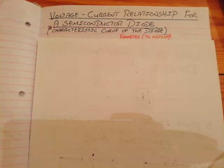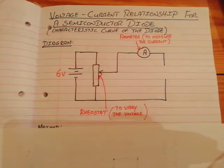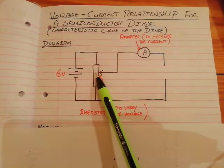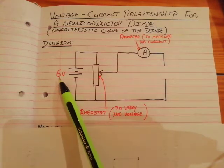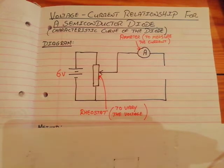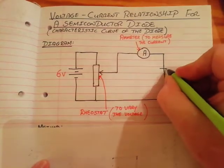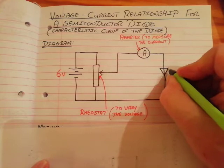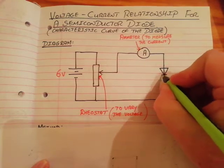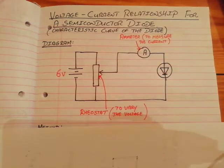It's going to be very similar to the ones we've looked at already for the metallic conductor and the filament bulb. Here is the circuit: we have a rheostat to vary the voltage and a battery to provide the voltage. The semiconductor diode goes in here.